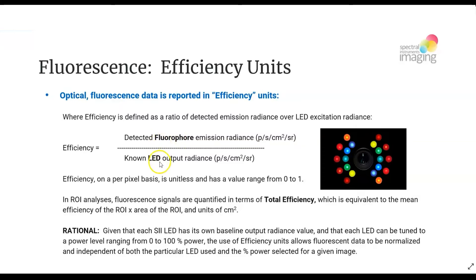Think about it — there's a large amount of light coming from that LED source, and only a fraction of it is going to actually hit the fluorophore in your mouse model system. So the numbers associated with efficiency values tend to be quite low with negative exponents, simply meaning that the numbers are quite small — not negative themselves, but small.